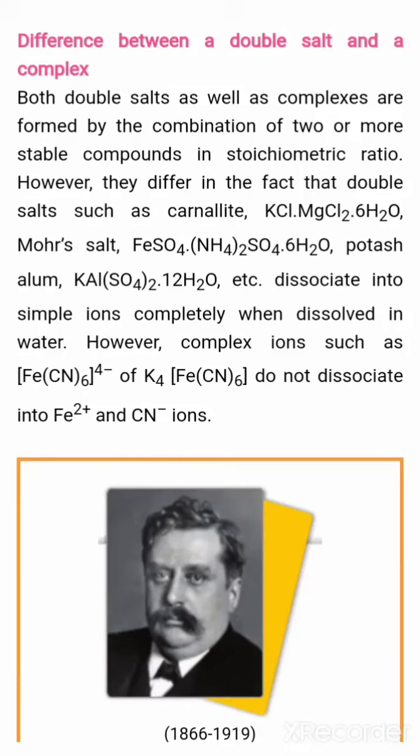Difference between a double salt and a complex: both double salts as well as complexes are formed by the combination of two or more stable compounds in stoichiometric ratio. However, they differ in the fact that double salts — such as carnelite KCl·MgCl₂·6H₂O, Mohr's salt FeSO₄·(NH₄)₂SO₄·6H₂O, and potash alum KAl(SO₄)₂·12H₂O — dissociate differently than complexes.